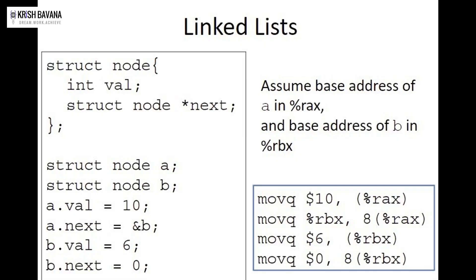A linked list is nothing but a node which points to another pointer, so pointers play a big role here. Everything is linked to the next node, and the final node will point to null — that is when we know there's no more linked list after that.